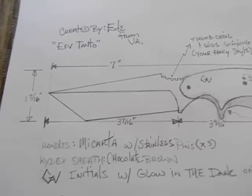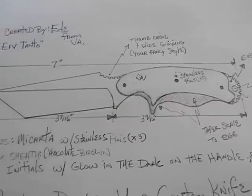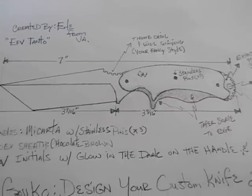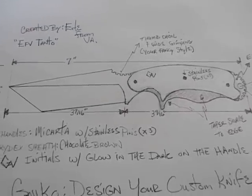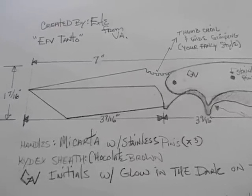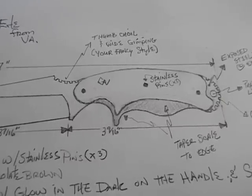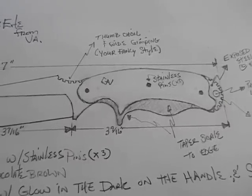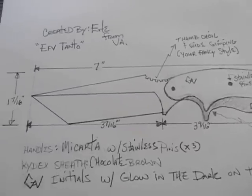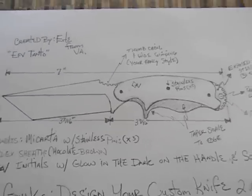Basically my design takes the full seven inch length. The Tonto blade length is going to be about three and seven sixteenths. And the handle area is going to be about three and nine sixteenths. The width is going to be approximately one and seven sixteenths which is just under the one and a half inch width.